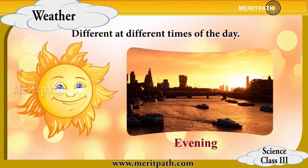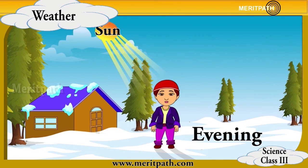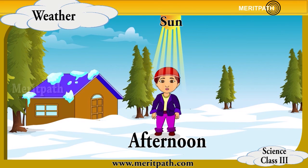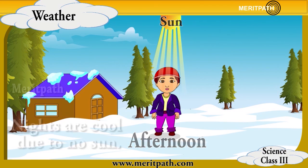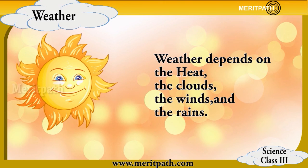You must have noticed that the weather in morning and evening is pleasant because of the slanting rays of the sun, while during afternoon the weather condition is hot as we receive direct sunlight. At nights the temperature is cold as there is no sun. So we can say that the weather conditions tend to change according to the heat, cloud, wind, and rain.